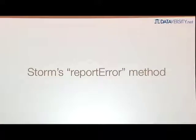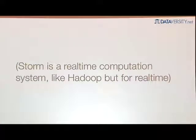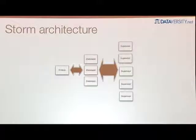The example I'm going to use is a small feature in Storm called the report error method. For those of you that don't know what Storm is, Storm is a real-time computation system — it's like Hadoop, but for real-time processing. In Storm, you run what are called topologies, which are infinite computations, whereas in Hadoop you run jobs, which are fixed computations. To understand this example, it's helpful to understand the high-level architecture of a Storm cluster.